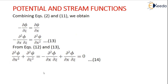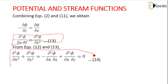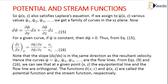Similarly, combining equations 2 and 11, we have minus dou squared psi by dou x dou z equals dou squared psi by dou x square — equations 12 and 13. Adding equations 12 and 13 and simplifying, we have dou squared psi by dou x squared plus dou squared psi by dou z squared equal to 0. So psi of x comma z will also satisfy the Laplace equation as shown above.